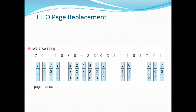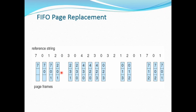Now let us look at an example using the FIFO page replacement algorithm. Here is a reference string containing the process numbers being used, and the page frame is of size 3. The first process, number 7, is entered into the buffer, then 0 and then 1. Now since the buffer is full, the first process to enter — number 7 — will be replaced by process number 2. When we go to the next process, number 0, since it is already in the buffer, there is no need to replace. The next is process number 3; since 0 is the oldest element in the buffer now, 0 will be replaced by 3.